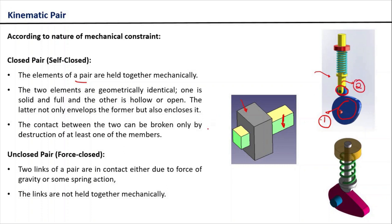Now you can see the contact between link one and two is being established because of the action of this spring. Here this type of pair, kinematic pair, will form under the category of unclosed pair.